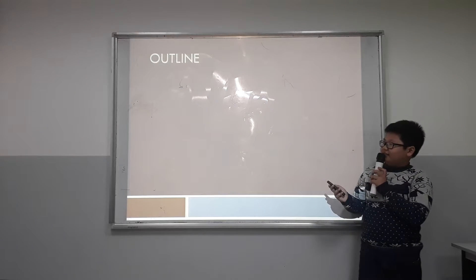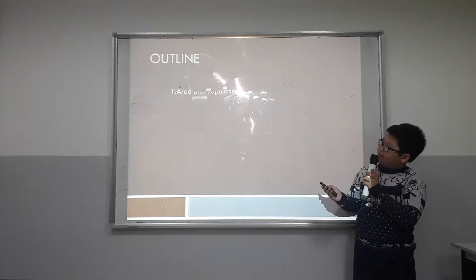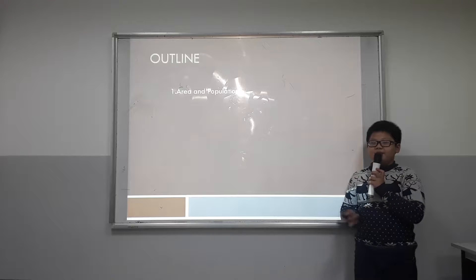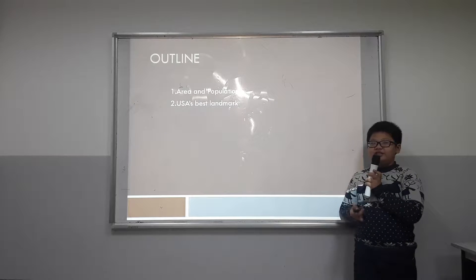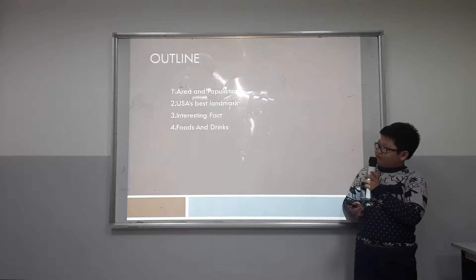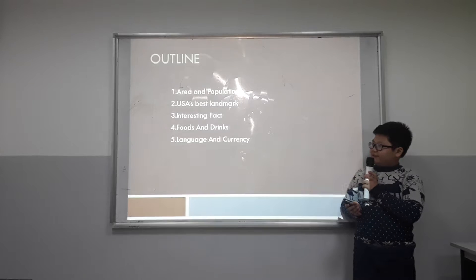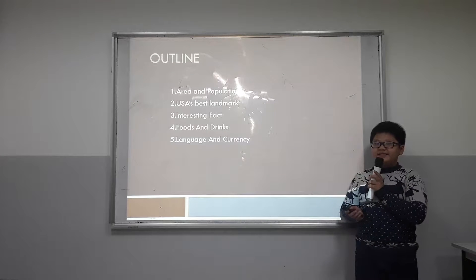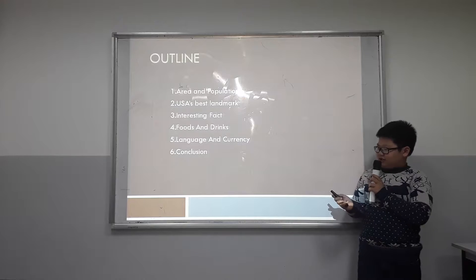In this outline, first I will tell you about area and population, the second is USA-based landmarks, the third is interesting facts, the fourth is food and drink, the fifth is language and currency, and the last is conclusion.